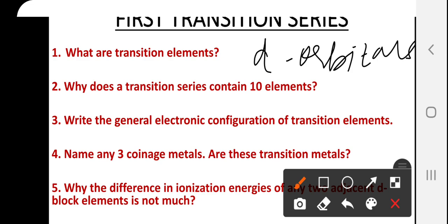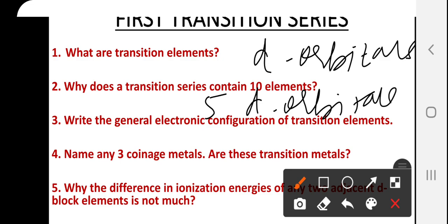The next question: why does a transition series contain 10 elements? There are 5 d orbitals in an energy level, and each orbital contains 2 electrons. So as we move from one element to the next, an electron is added, and for complete filling of the 5 d orbitals, 10 electrons are required. On that basis, we can say that a transition series will contain 10 elements.